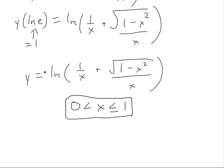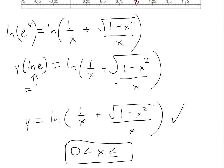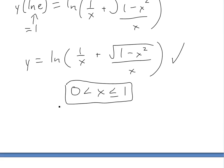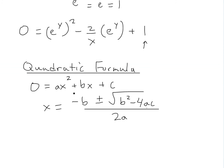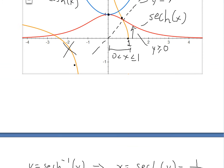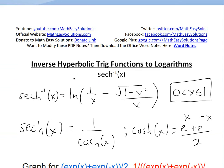And y is greater than 0, as given by the ln function. That's all for today — this is exactly what we set out to prove: y equals the inverse hyperbolic secant of x equals that ln function. You can download these exact notes in the Dropbox link below. Thanks for watching, and stay tuned for another Math Easy Solution.